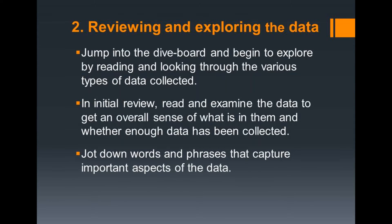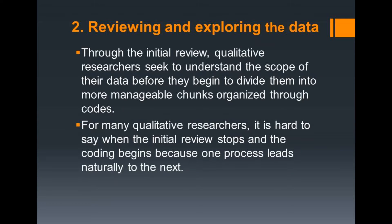The second step is a lot like jumping off the high dive board at a swimming pool — that is, into an enormous pile of data waiting for analysis. All you can do is jump in and begin to explore by reading and looking through the various types of data collected. The initial review does not involve a careful reading for detail. Instead, one reads and examines data to get an overall sense of what is in them and whether enough data have been collected. Begin to jot down words and phrases that capture important aspects of the data in this initial review. The real purpose is to immerse oneself in the data and gain a sense of their possibilities. Through the initial review, qualitative researchers seek to understand the scope of their data before they begin to divide them into more manageable chunks or organize through codes. For many qualitative researchers, it is hard to say when the initial review stops and the coding begins because one process leads naturally to the next.